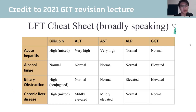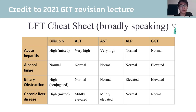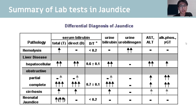In terms of LFT patterns: acute hepatitis causes high transaminases with mixed bilirubin. An alcohol binge elevates GGT. Biliary obstruction shows conjugated bilirubin with elevated ALP and GGT. Chronic liver disease shows high mixed bilirubin with only mildly elevated ALT and AST, because it's a chronic rather than acute picture.